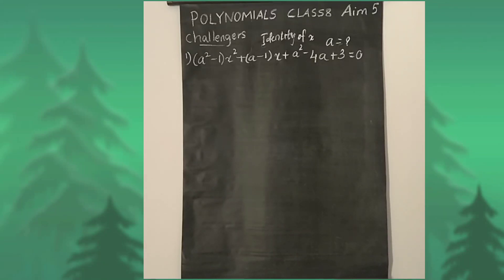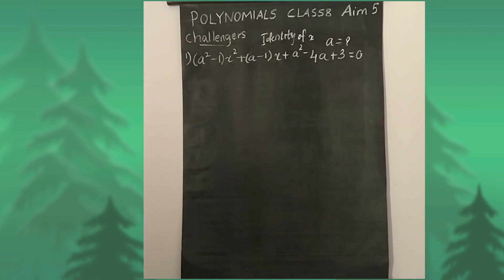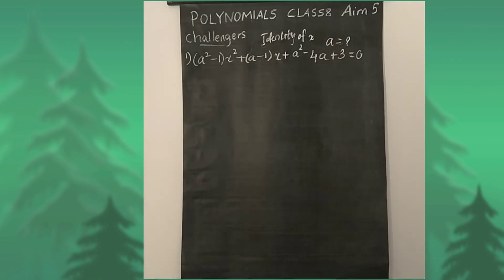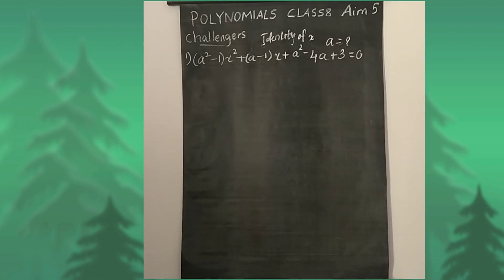Hi everyone, welcome to Vishwa Bloom. Today we will be looking at AIM 5 challenges. First question: (a² - 1)(x² + (a-1)x + a² - 4a + 3) = 0. It is the identity of x. We have to find the value of a.